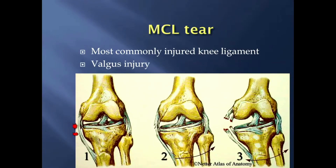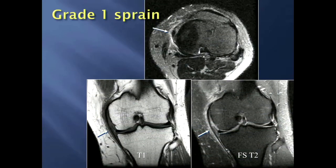The MCL is the most commonly injured knee ligament, occurring due to a valgus injury where the tibia is angled out laterally, causing stretch on the MCL. It's broken down into three main types: a grade 1 sprain, which is probably the single most common injury to the medial collateral ligament; a grade 2 partial tear; and a grade 3 complete tear, similar to what we see with the ACL.